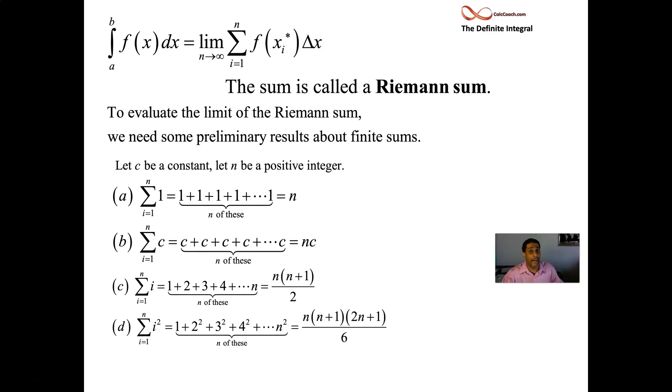Just a couple more formulas. i squared, the sum of the i squares, the sum of the squares. So one plus four plus nine plus 16 up to n squared. There's a formula for that. And so it's n times n plus one times two n plus one, all divided by six.